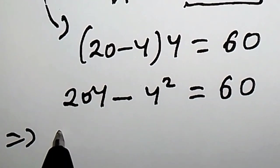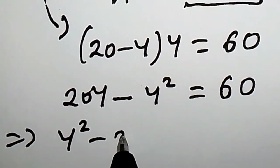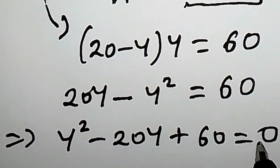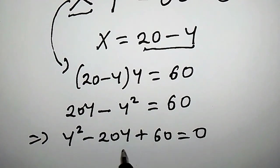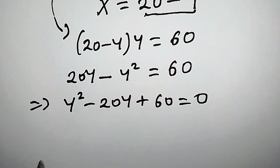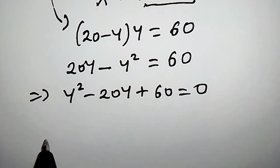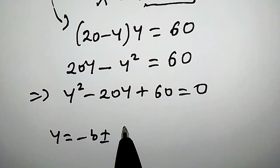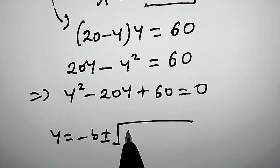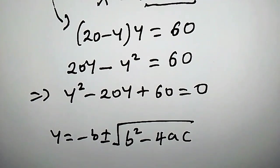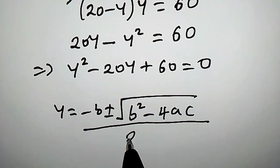This implies that y squared minus 20y plus 60 is equal to 0. By just rearranging the equation, we have this. We can solve this quadratic equation using the quadratic formula: y equals negative b plus or minus the square root of b squared minus 4ac, all divided by 2a.